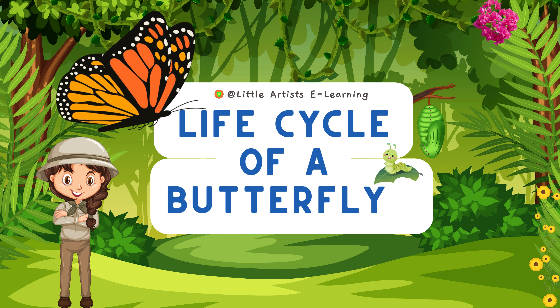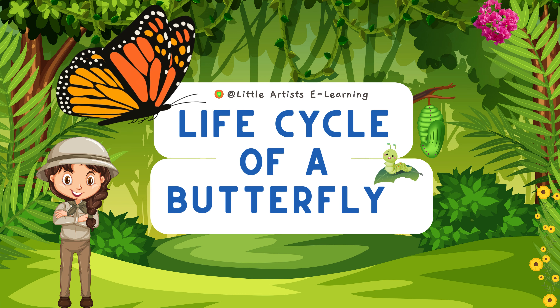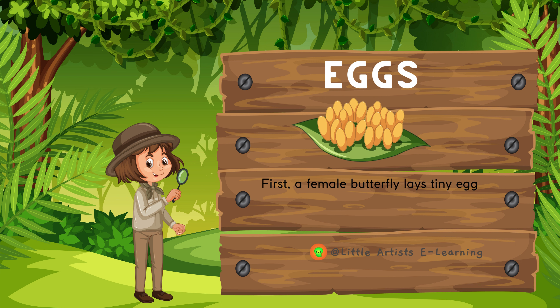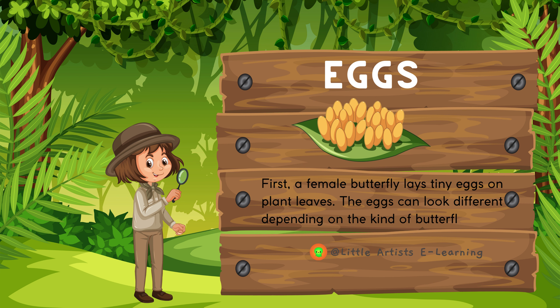Life Cycle of a Butterfly. First, a female butterfly lays tiny eggs on plant leaves. The eggs can look different depending on the kind of butterfly.